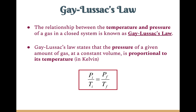Gay-Lussac's Law states that the pressure of a given amount of gas at a constant volume is proportional to its temperature in Kelvin. Whenever we're using temperatures in our calculations, we have to have them in the unit of Kelvin. The equation is: initial pressure over initial temperature equals the final pressure over the final temperature, which is the relationship for when two variables are directly proportional to each other.